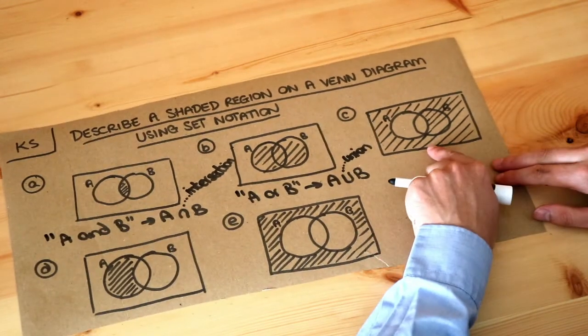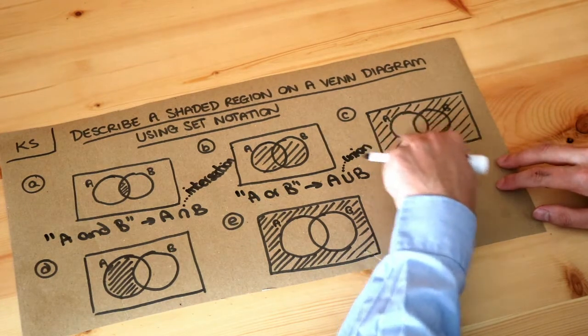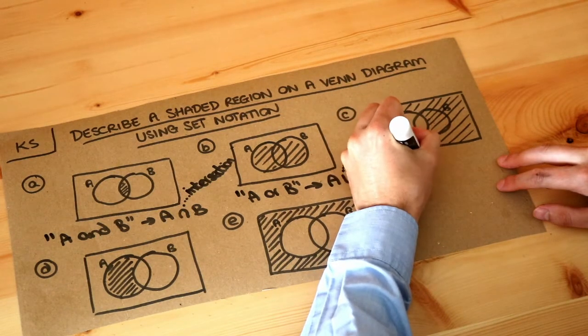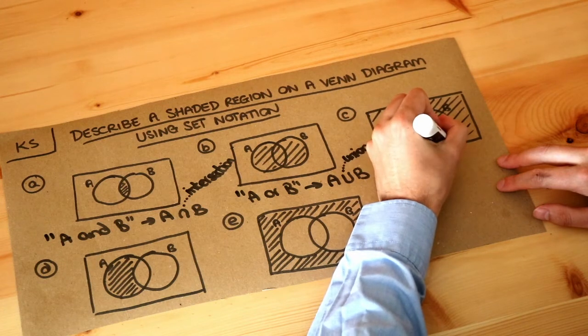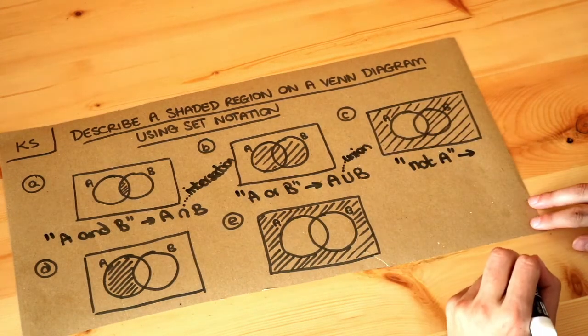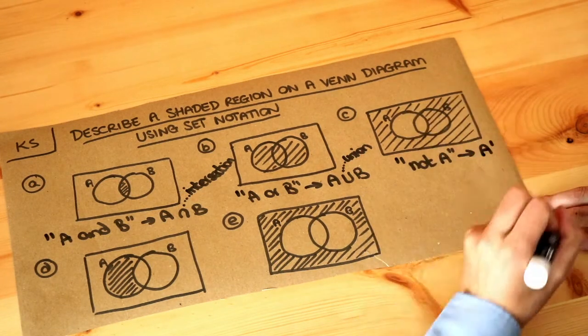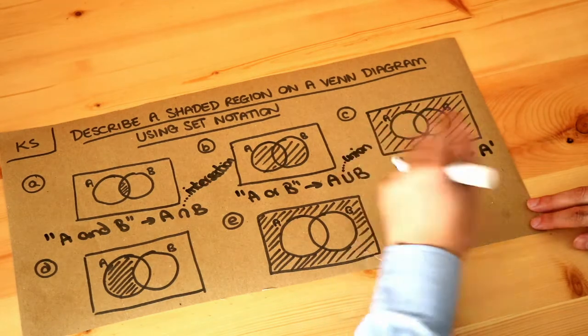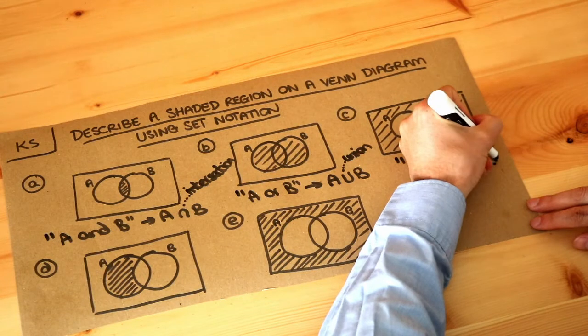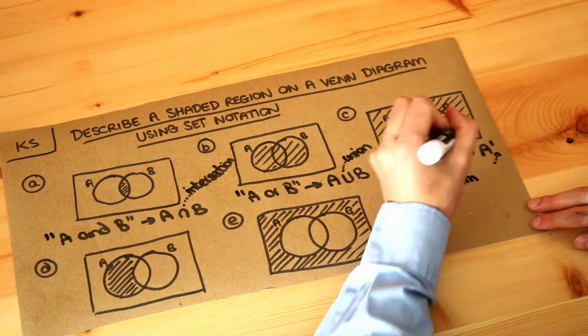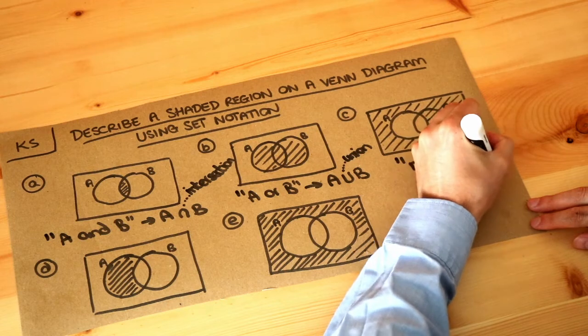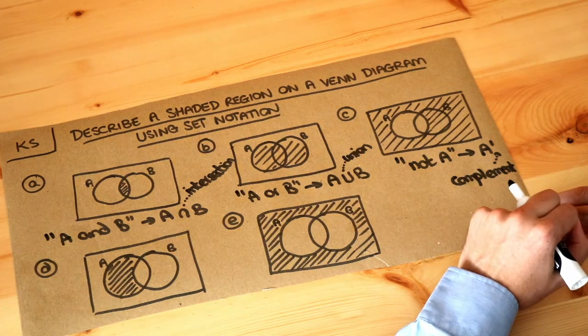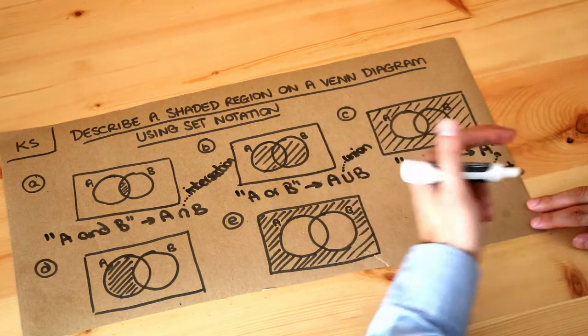What about the next one? Well here we've shaded everything except for the circle A, so we want everything that's not in A. The way we write that in formal mathematical notation is A prime, which is known as the complement of A. It means the stuff that's not in A. Complement means opposite, so the complement of married is unmarried, for example.